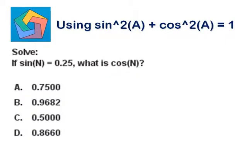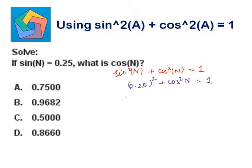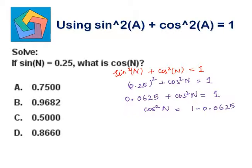Next problem. Solve: if sine n is 0.25, what is cos n? Sine squared n plus cos squared n should be equal to 1. 0.25 squared is 0.0625. So 0.0625 plus cos squared n should be equal to 1. Cos squared n should be equal to 1 minus 0.0625. So cos squared n is equal to 0.9375.